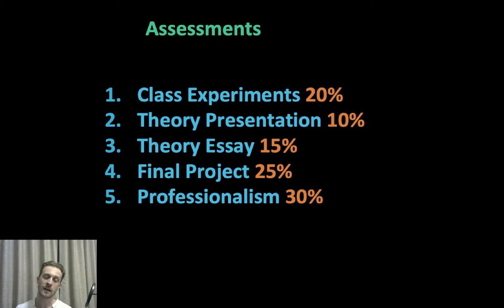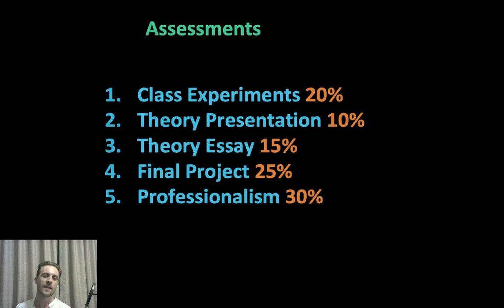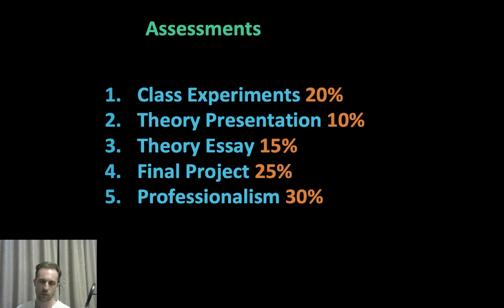The theory essay is really based on the theory presentation — it's worth 15%, and we're going to do some writing exercises for you, so if you want to get better at your writing, this course should help you a lot. And then there's the final project — the major creative work of the course — where you can take all the different skills you've learned between Cedric, Daniel and my own lessons and make a new creative work. And then with most AVA courses, we have the professionalism grade.